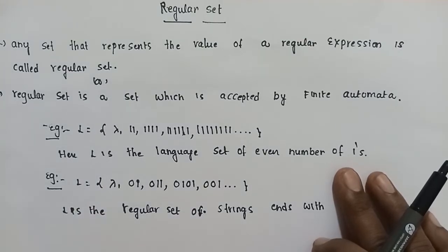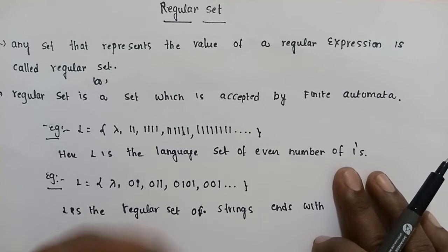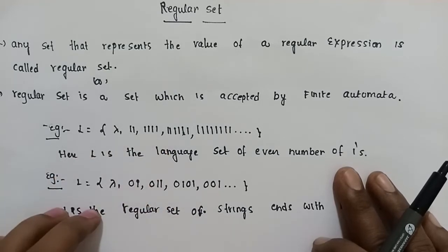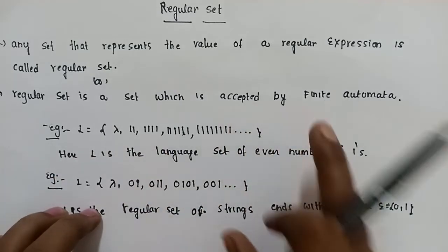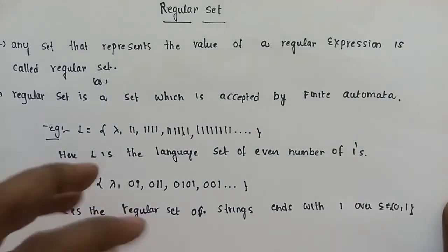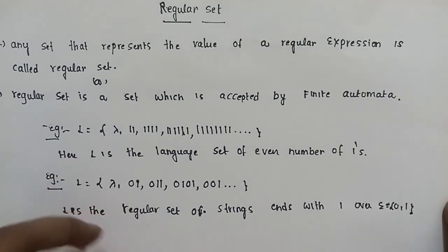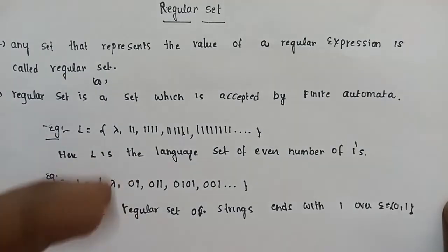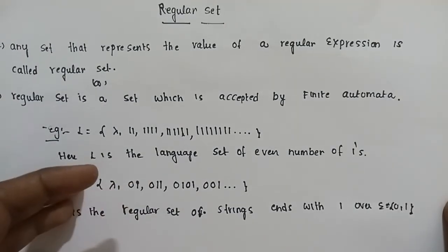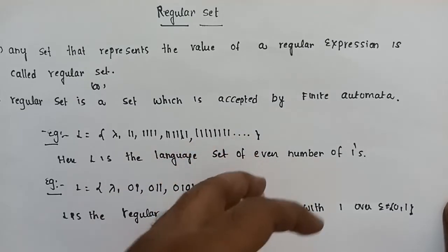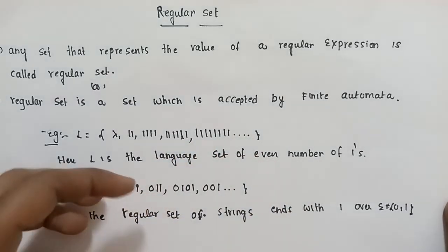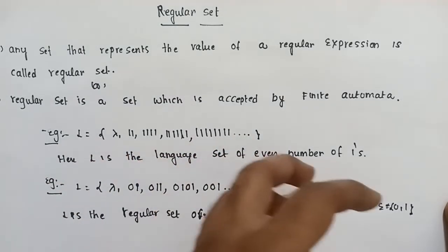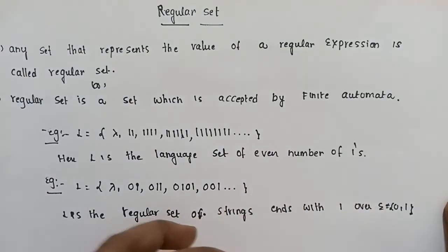A regular expression forms a regular set. A regular set is a set which is accepted by the finite automata. Why is it accepted by the finite automata? Because it is a regular expression form set. A regular expression is a language which is accepted by the finite automata.